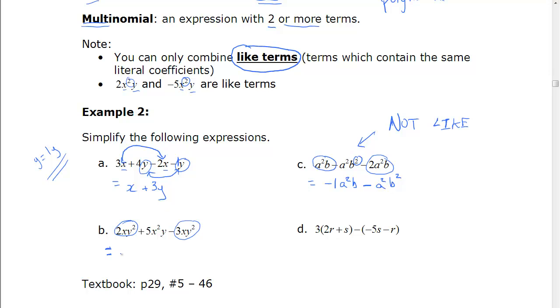So 2 minus 3 is negative xy squared. 2 minus 3. And the 5x squared y stays.